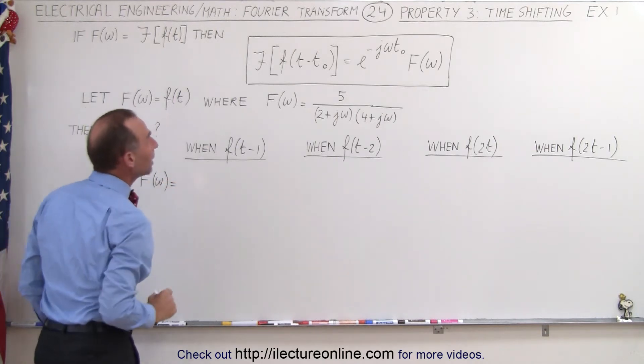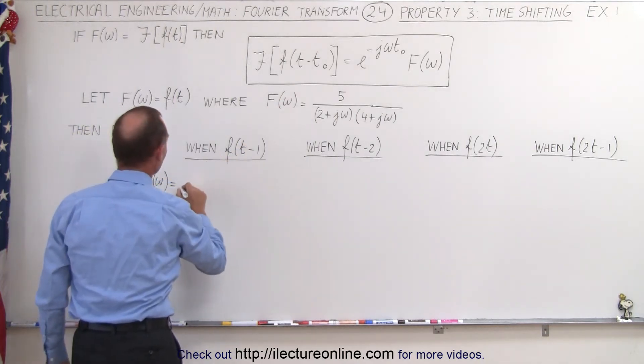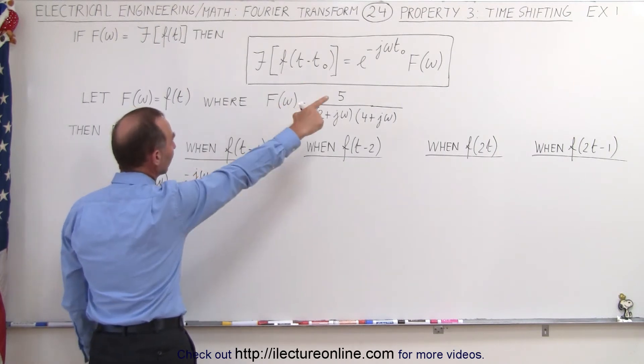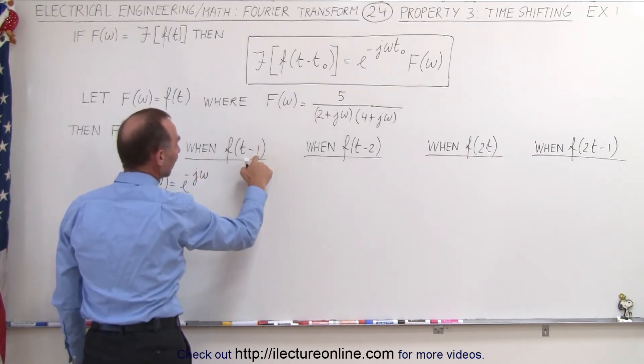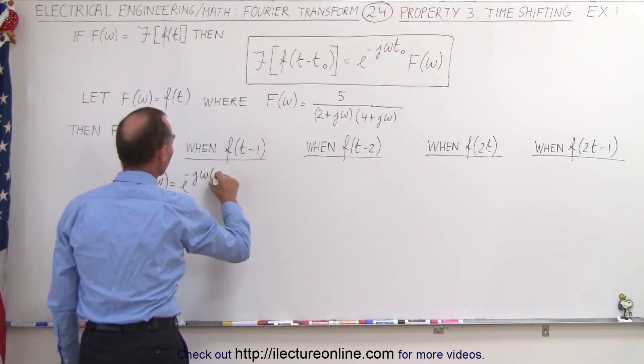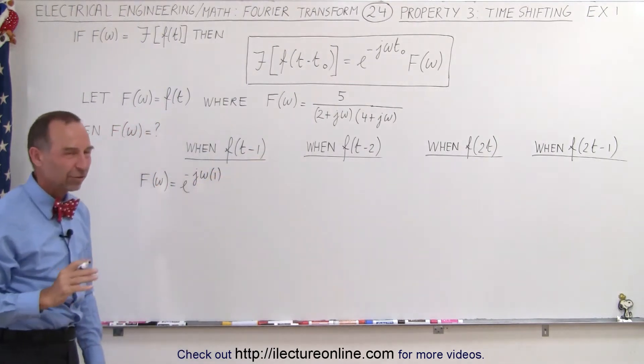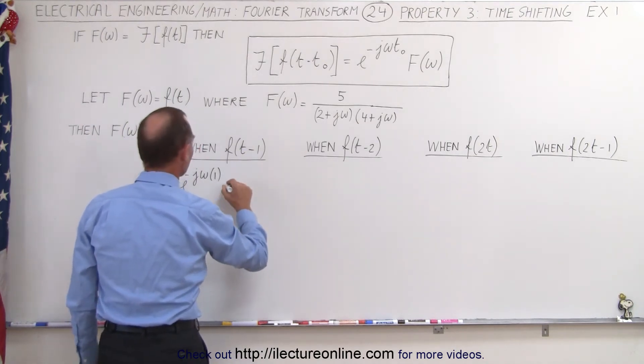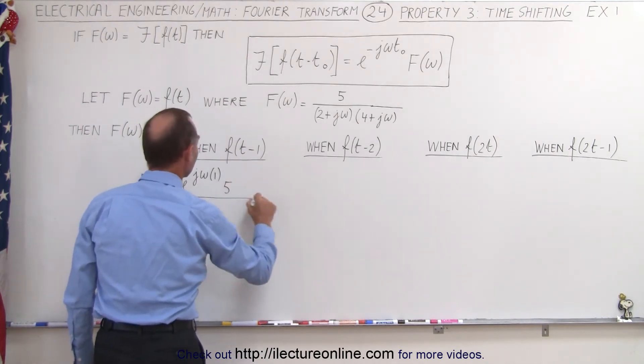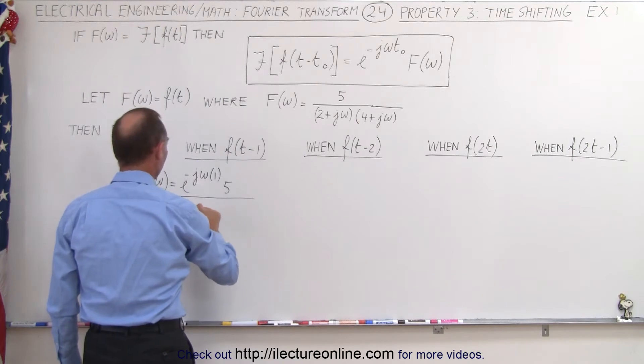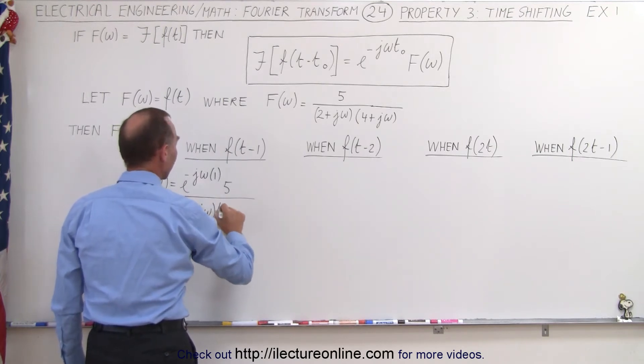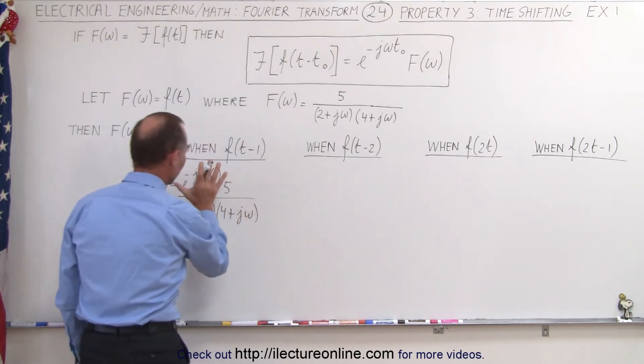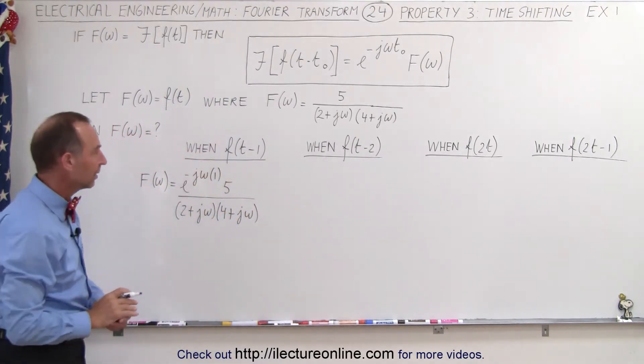will now be equal to, we place in front e to the minus j omega, and instead of the t sub naught here, that's the time shift right here, will be a one, so we plug the one in there, just put it like that so you can see it. And then we write the rest of the Fourier transform: that would be five in the numerator divided by two plus j omega times four plus j omega. So nothing else changes except for an additional factor.